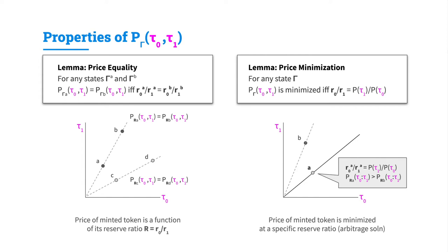Secondly, we have the price minimization lemma, which states that for any state γ, the price of a minted token type is minimized if and only if the reserve ratio equals the inverse of the prices of its respective atomic tokens. If we plot all reserve states with a specific reserve ratio fulfilling this condition — shown as the dark line in the plot — any reserve state along this line will have the lowest possible minted token price.